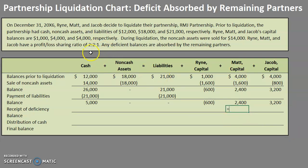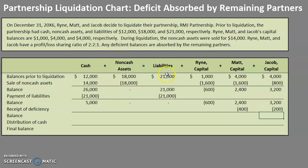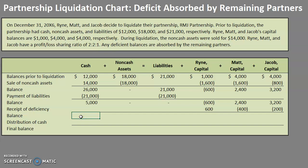Matt had the two in the 2 to 1 ratio, so he absorbs 2 thirds of the negative $600 deficit — that's $400. Jacob absorbs 1 third of the $600 deficit — that's $200. Since Matt and Jacob absorbed Ryan's deficit, we increase Ryan's balance by $600, which brings his capital balance to zero. Matt and Jacob can contact Ryan personally to ask for reimbursement if they'd like.